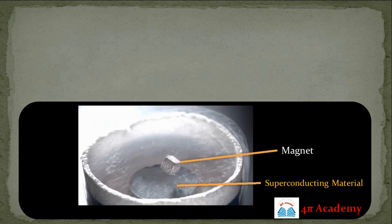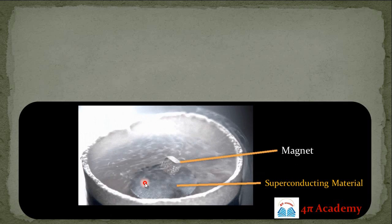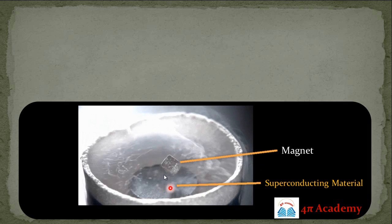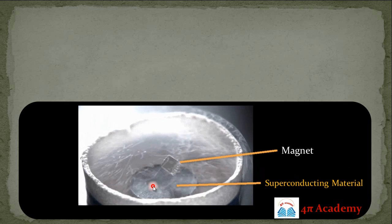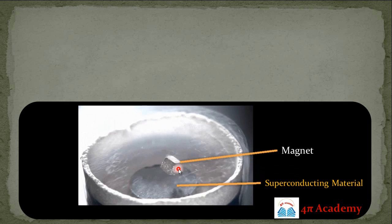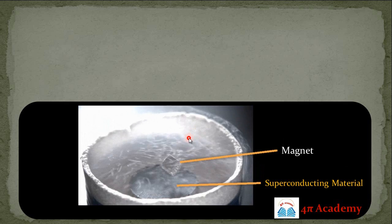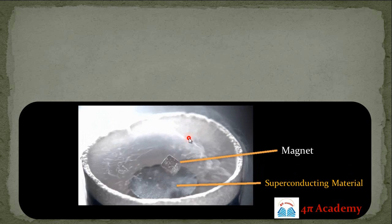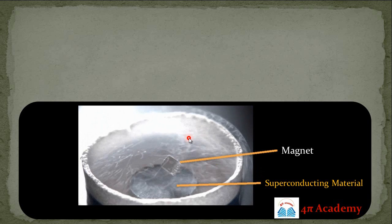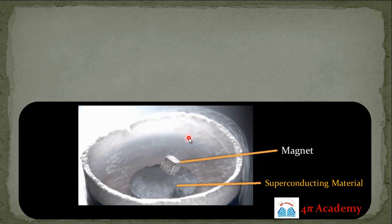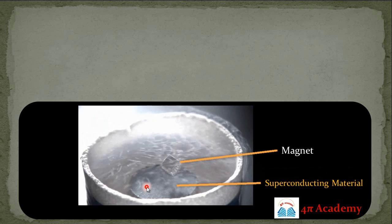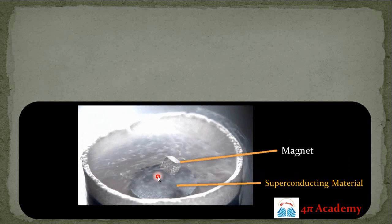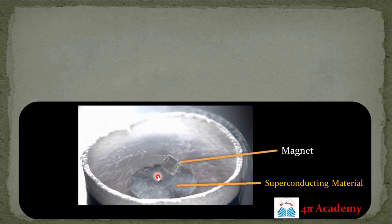Now we will see the demonstration of this very interesting Meissner effect. This experiment is very interesting and easy to perform in the laboratory. This type of substance here is the superconducting material, and this one is your magnet. The fumes you can see are from liquid nitrogen. We are using liquid nitrogen because its temperature is very, very small — nearly minus 196 degrees Celsius. At this particular temperature, your material is superconducting, because the critical temperatures of different superconductors are very low. That's why we are using liquid nitrogen.